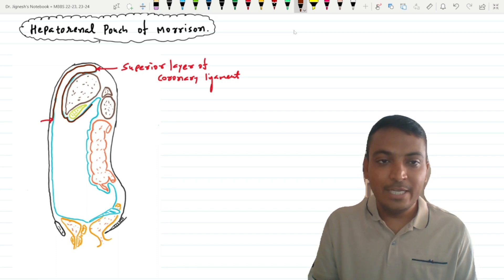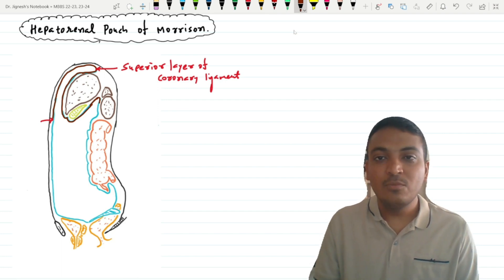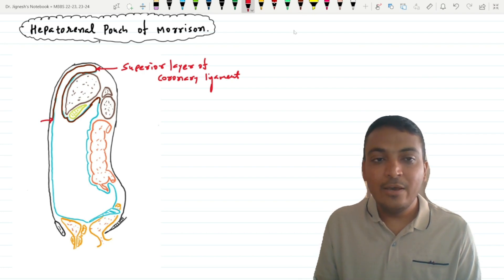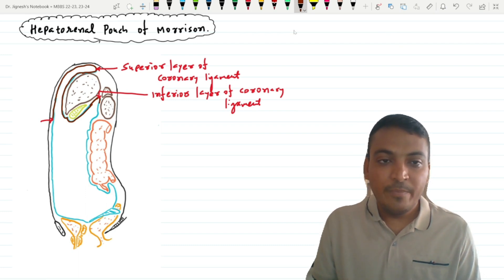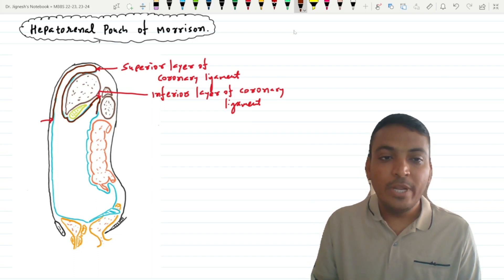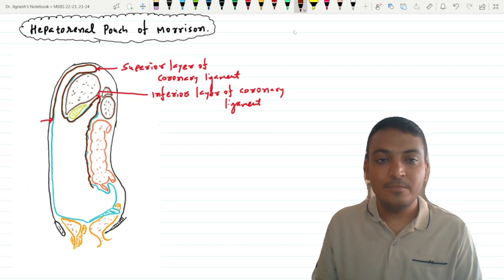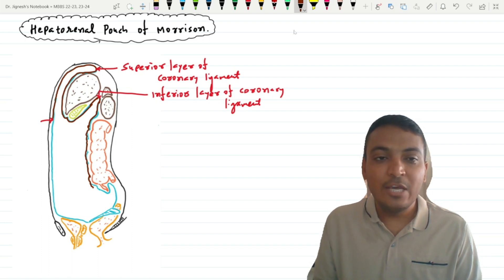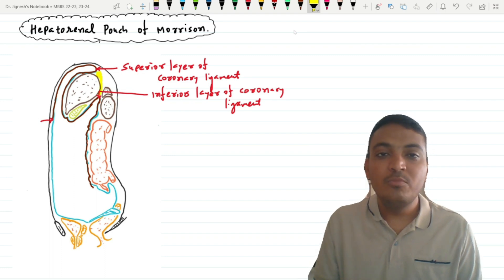After covering the gallbladder, this visceral layer covers the inferior surface of the liver and is then reflected onto the right kidney. That band of peritoneum at the posterior surface of the liver is called the inferior layer of the coronary ligament. After forming this inferior layer, the visceral peritoneum covers the anterior surface of the right kidney, the right colic flexure, the ascending colon, and merges with the pericolic gutter on the right side. The space between the superior and inferior layers of the coronary ligament is called the bare area of the liver, as it is not covered by any layer of the peritoneal cavity.